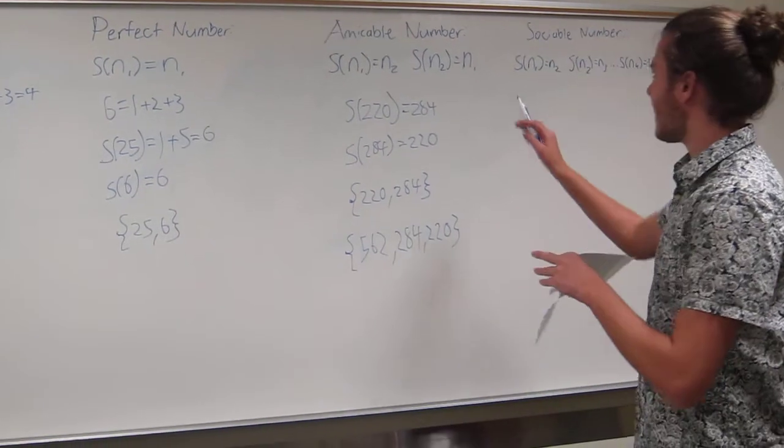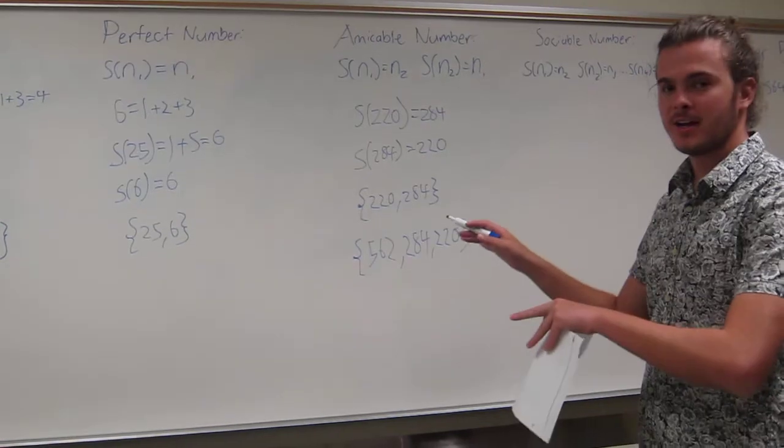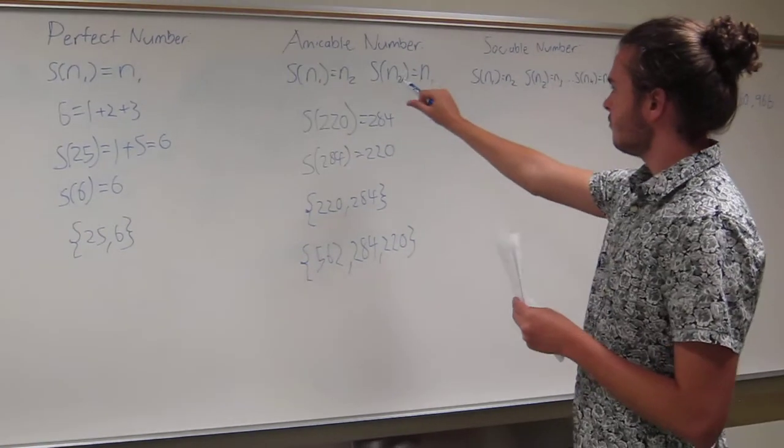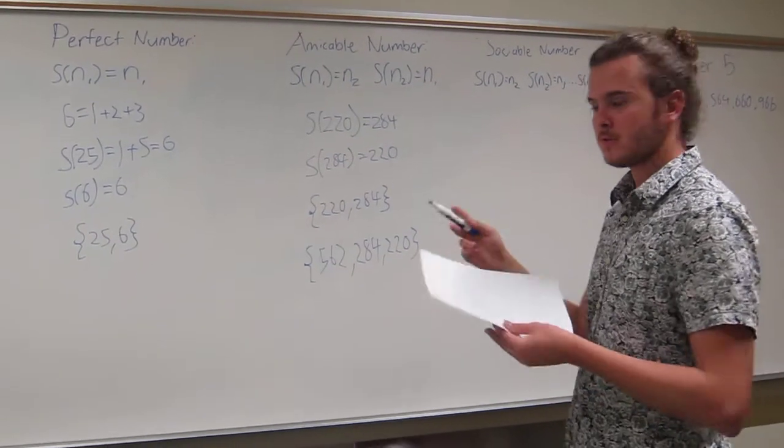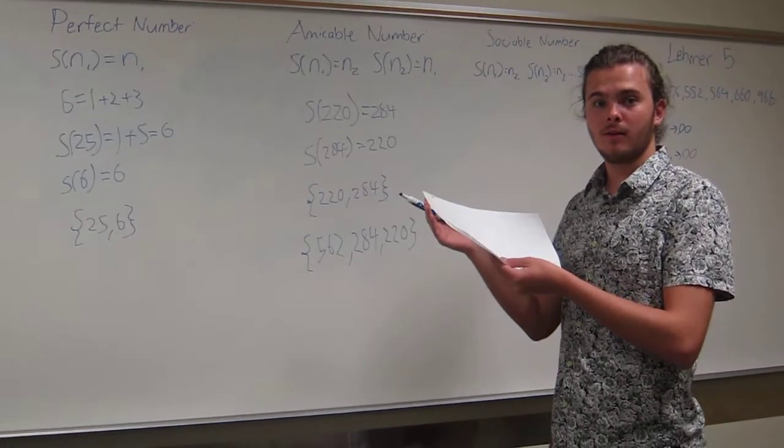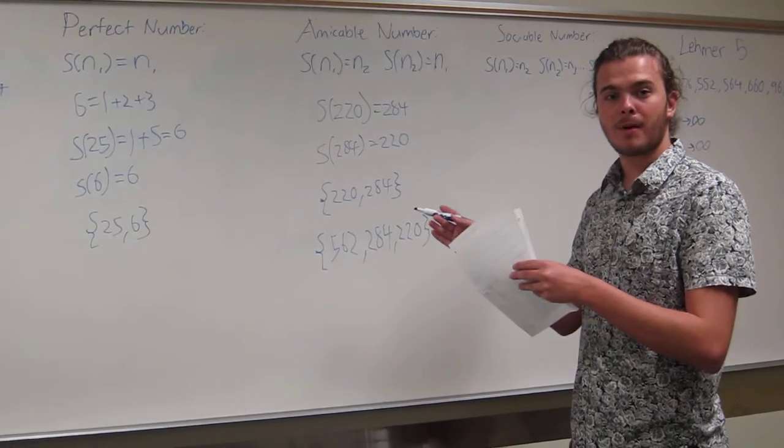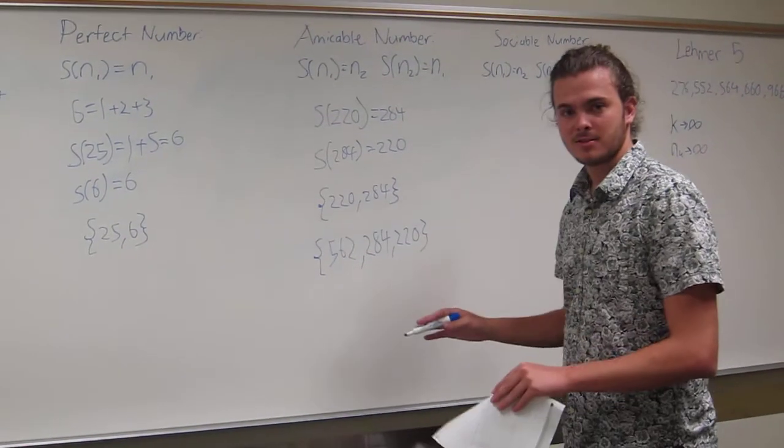The concept - and this is a side note that I would like to tell you about these amicable numbers that pertains to this topic - is abundant and deficient numbers. An abundant number is basically when the sum of the proper divisors is greater than the original number. And a deficient number is when the sum of the proper divisors is less than the original number.